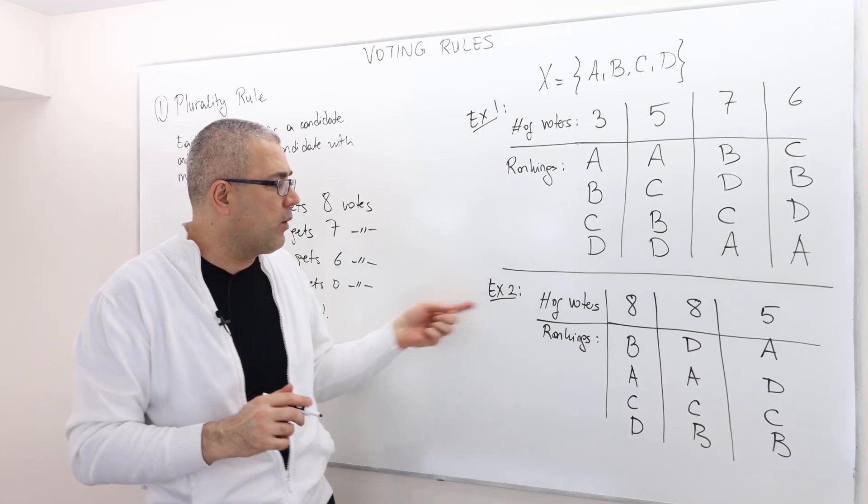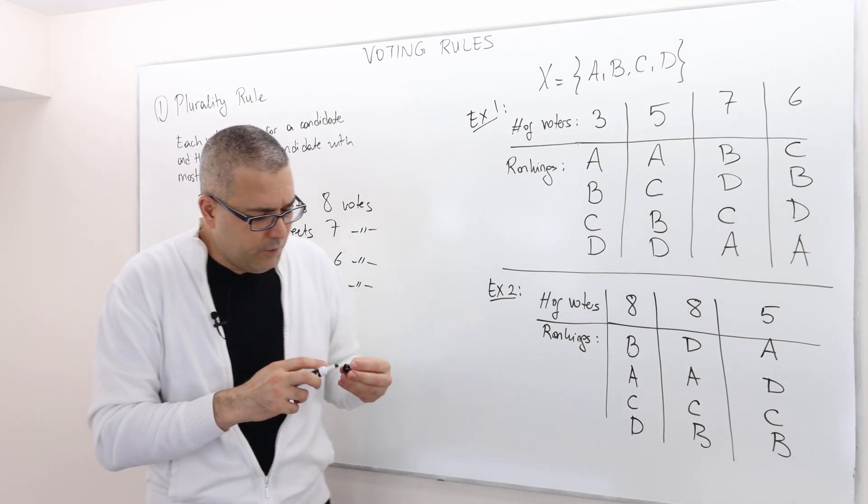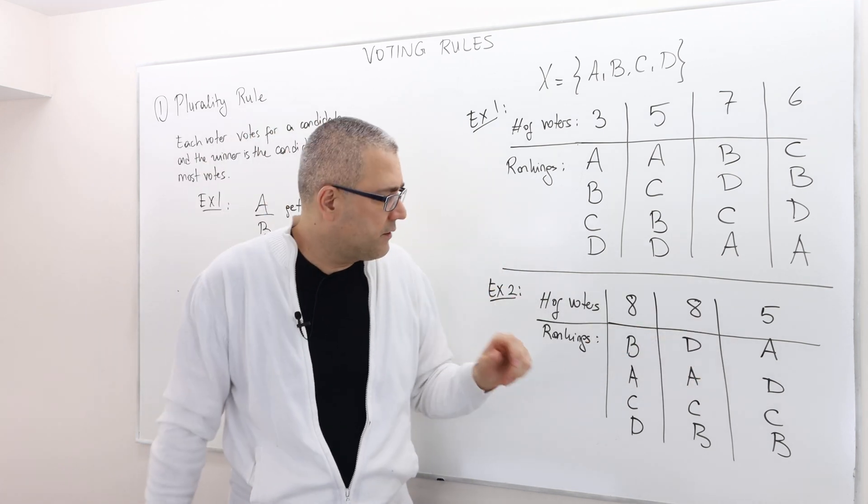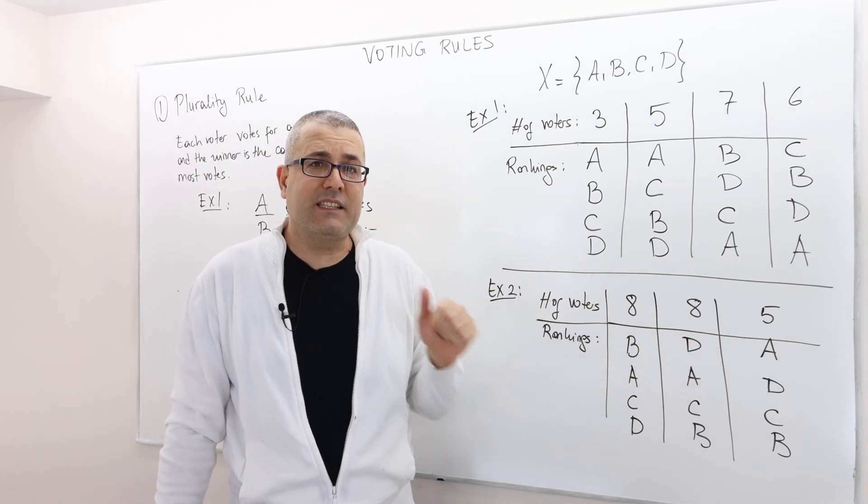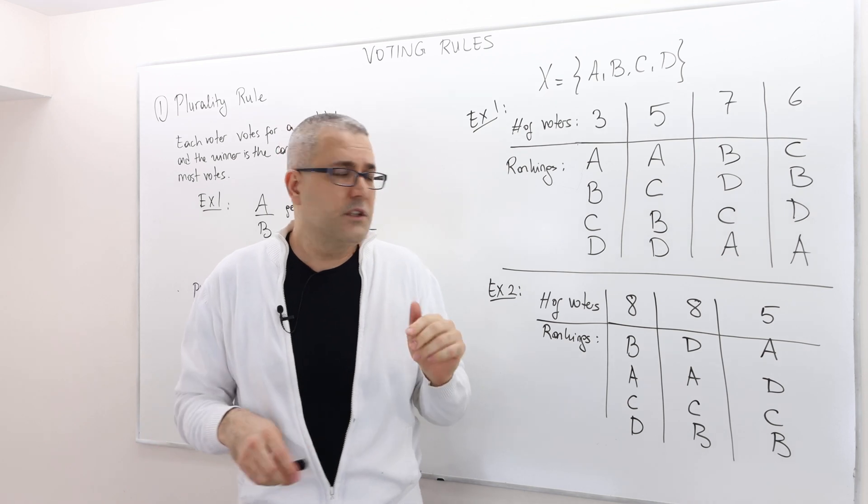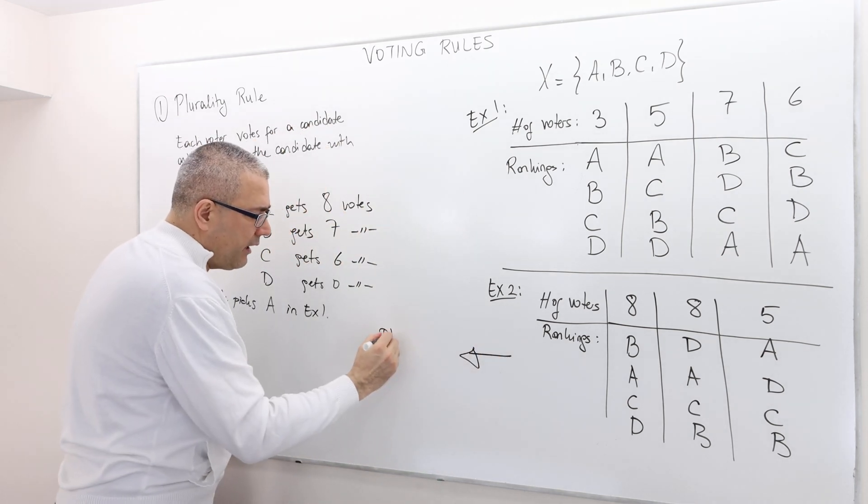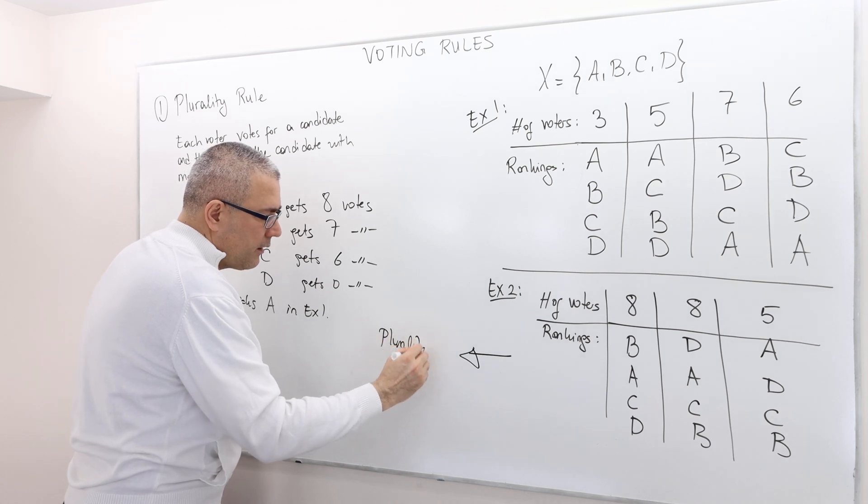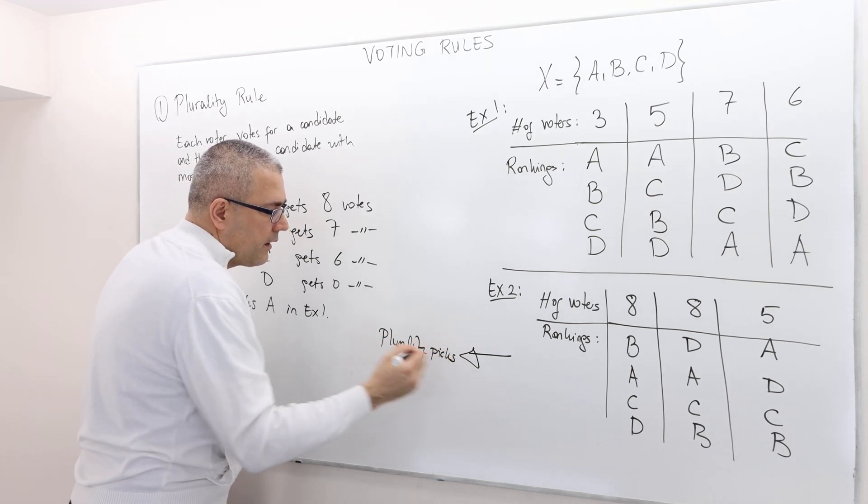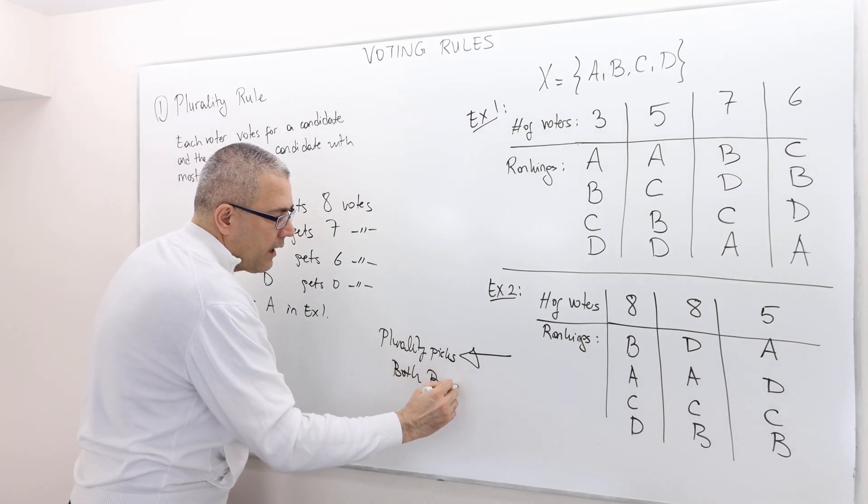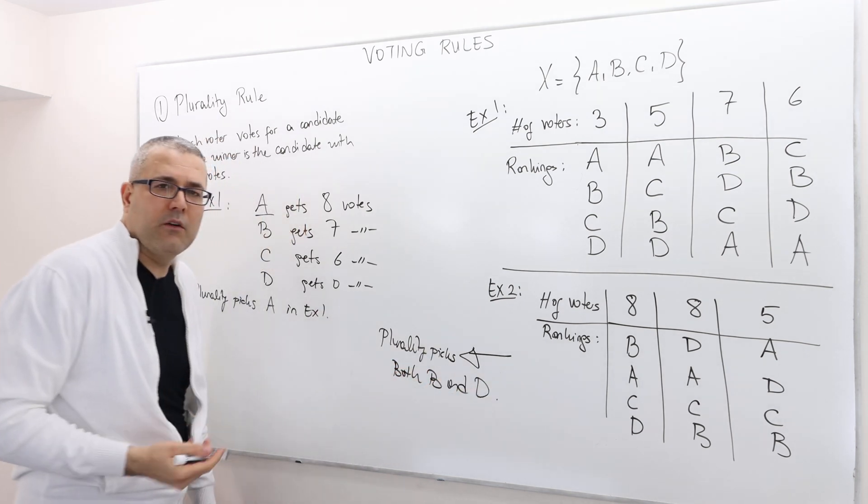Well, what about example two? If you look at this example, candidate A gets five votes, candidate B and D gets eight votes, and C gets zero votes. So, therefore, in the second example, plurality picks both B and D.